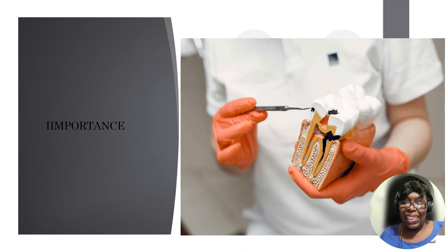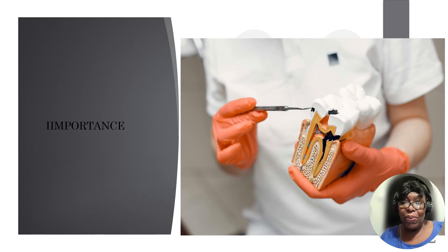So what is tooth decay? Tooth decay is when bacteria in your mouth acts on the sugar in your food to produce acid, which attacks your teeth. If you look at the model, decay starts from the surface — the dentist is showing the probe on the side, but on top is the occlusal surface, and that looks like the interproximal surface.